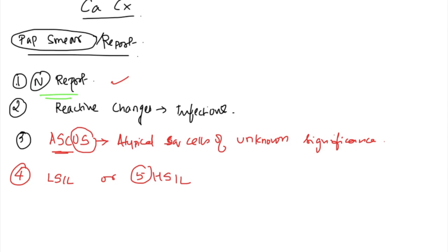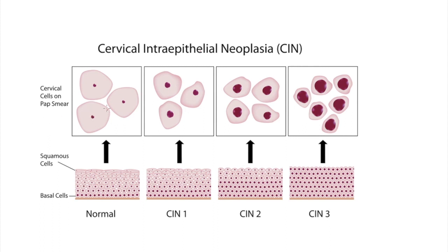ASCUS means atypical cells are present. Normally, superficial cells have a tiny nucleus and eosinophilic cytoplasm. As dysplasia progresses from CIN 1 to CIN 2 to CIN 3, the nucleus size progressively increases. On pap smear, CIN 2 and CIN 3 type changes are reported as HSIL, while CIN 1 type changes are reported as LSIL.